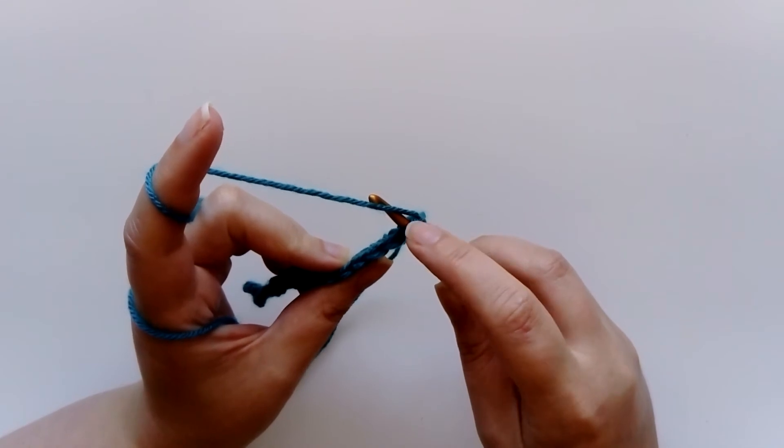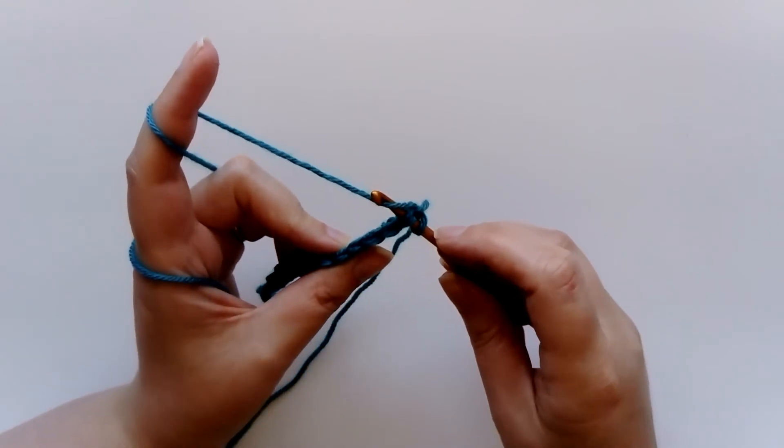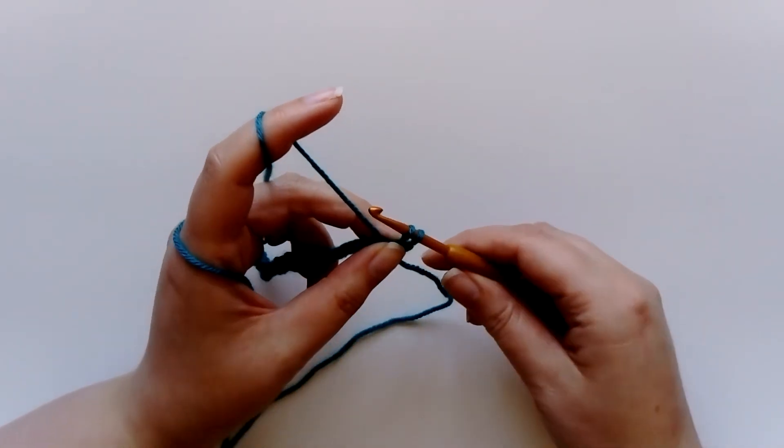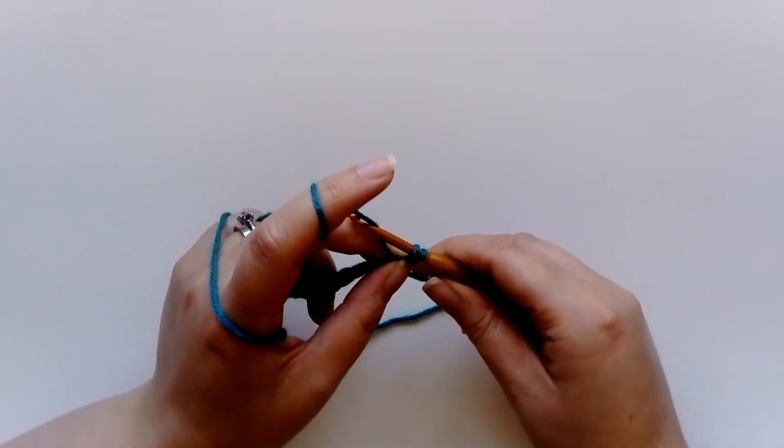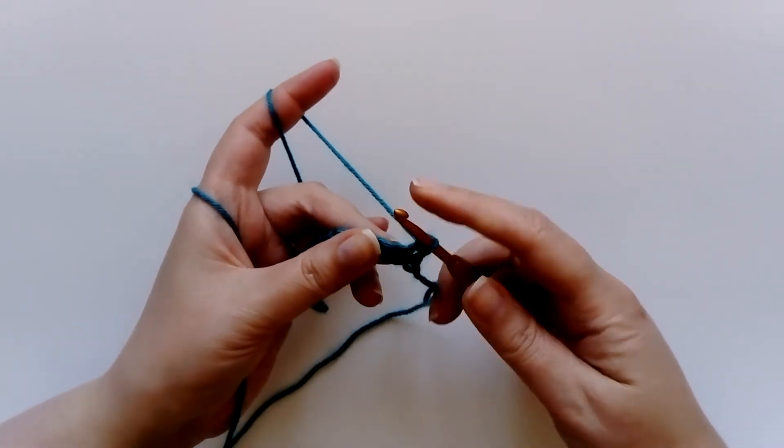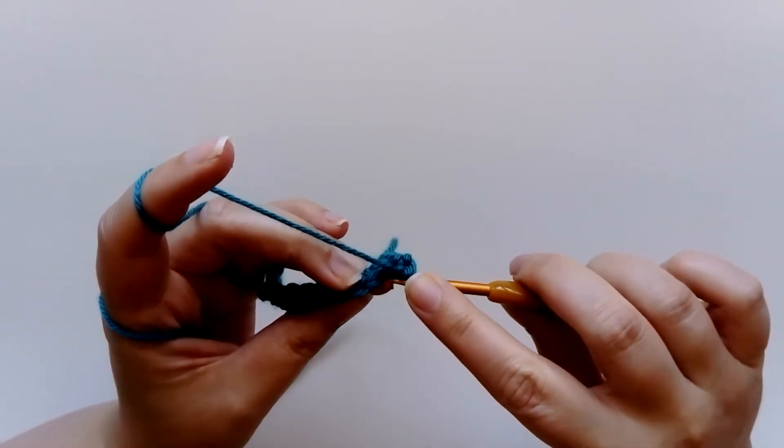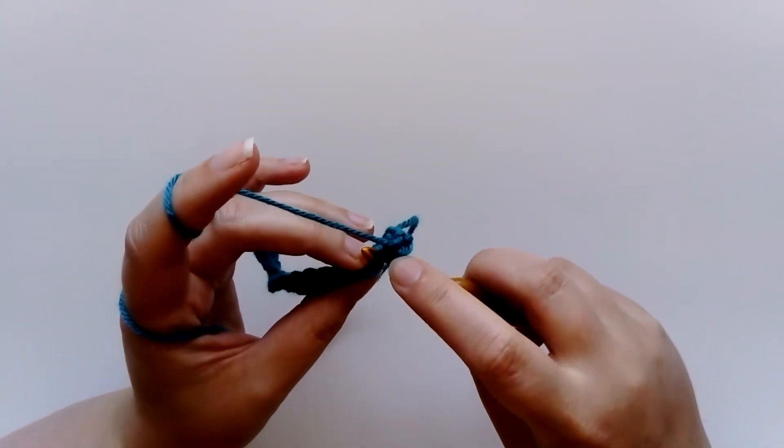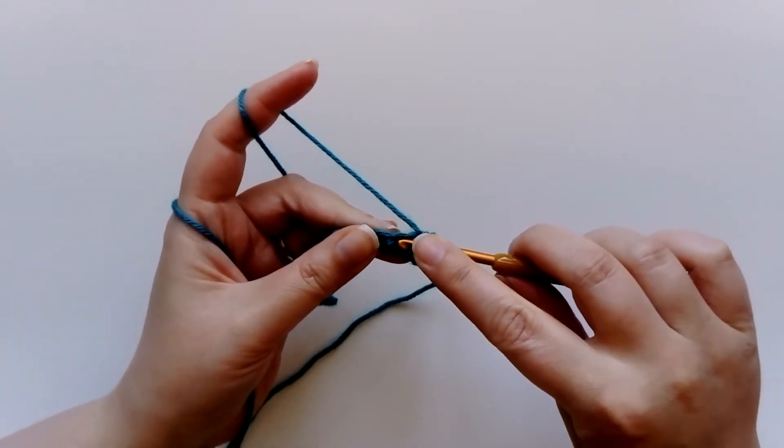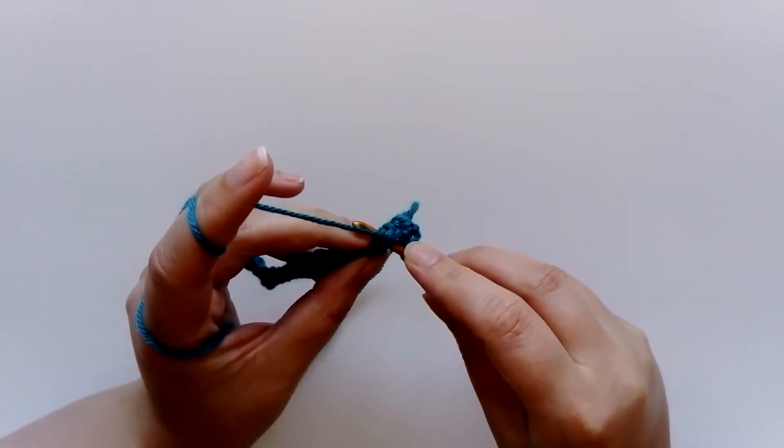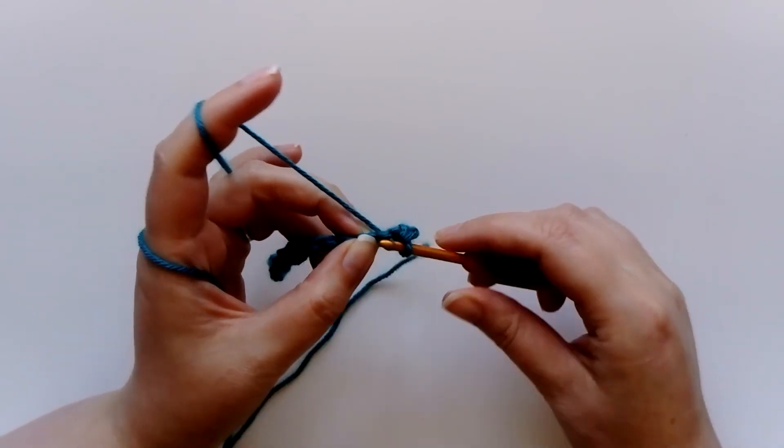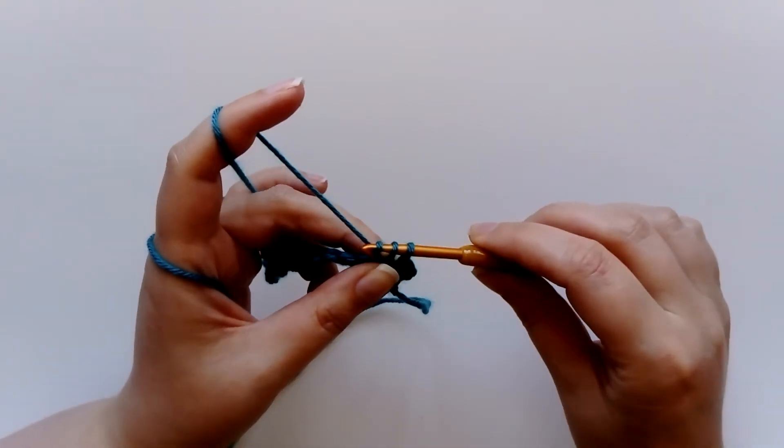And then you grab the yarn like before, pull it through the stitch so both those strands, you've got two loops on your hook, wrap it over and pull it through both loops. And then look for your next stitch along, both of those strands. From the side, you can see there's a little hole underneath them. From the top, it's that V shape.